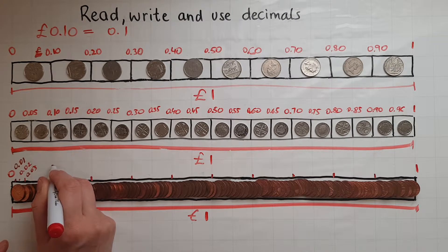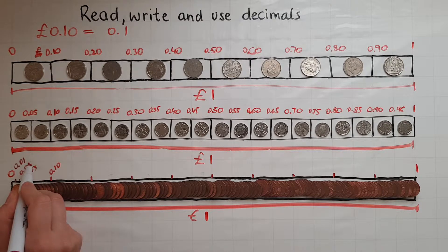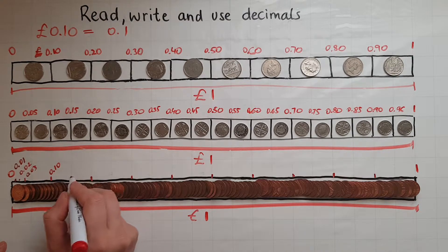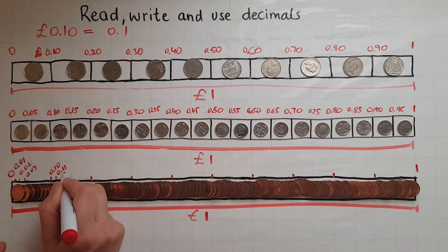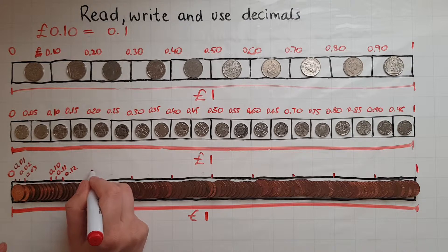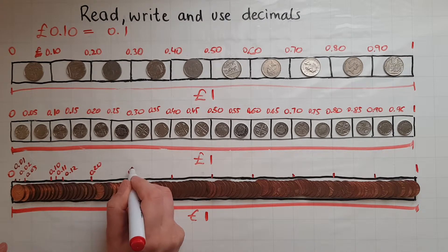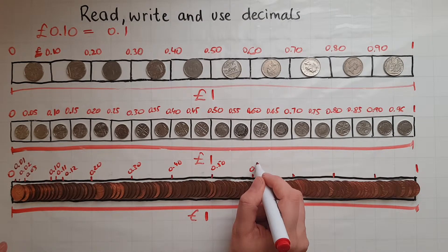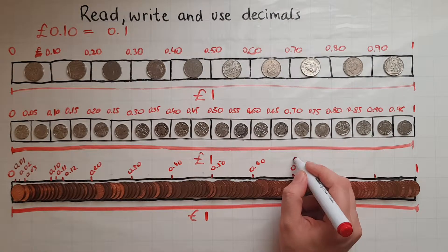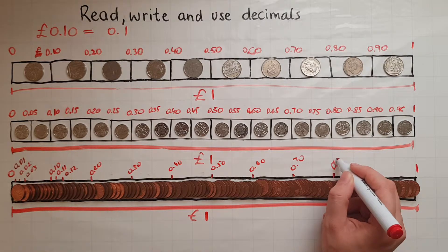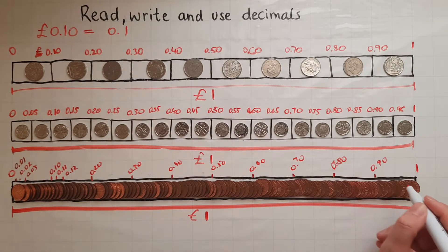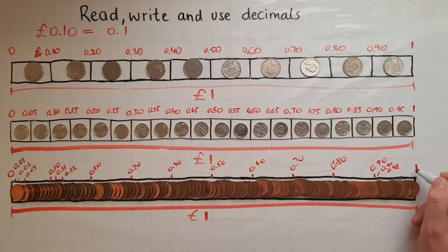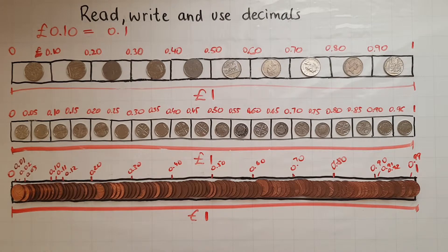We're up to the point where we have 0.10. So you can see that one, two, three and that 10 after the point, which we read as 0.10. Then 0.50, 0.60, 0.70, 0.80, 0.90. And here would be 0.91, 0.92, 0.93, 0.99, and then there comes one.